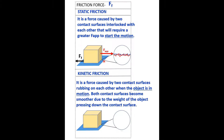Kinetic friction is a force caused by two contact surfaces rubbing on each other when the object is in motion. Both contact surfaces become smoother due to the weight of the object pressing down on the contact surface. Therefore, the applied force will be less and the force of friction will also be less.